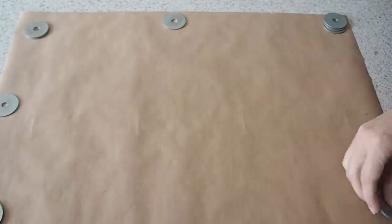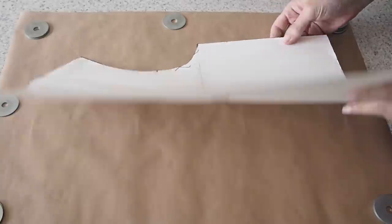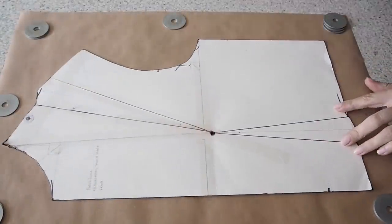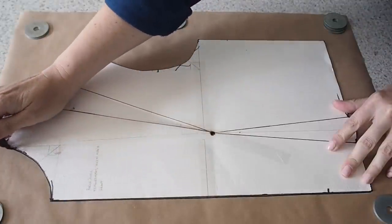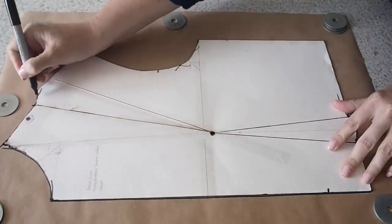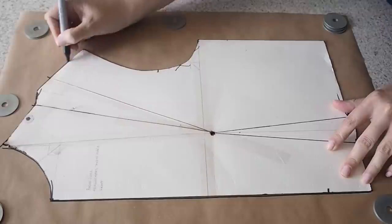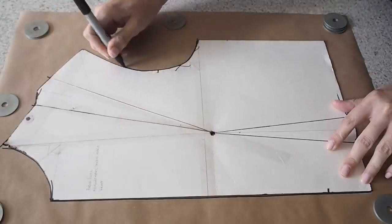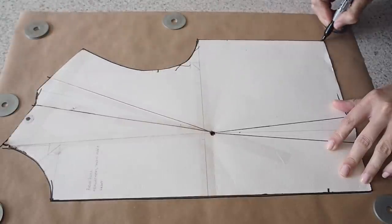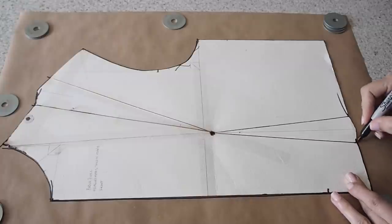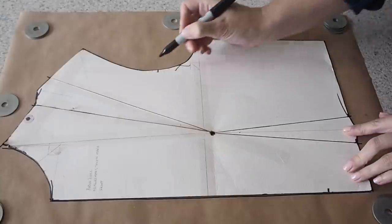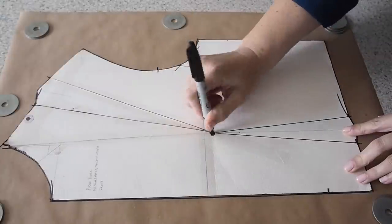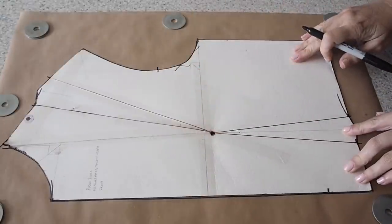So the first thing to do here is to trace my darted woven block onto some standard pattern paper. And to use all three of these techniques, you don't have to have a block, you could use a standard commercial pattern as long as the apex is clearly marked. Making sure I'm adding in all of my markings, my dart legs, my sleeve notch.